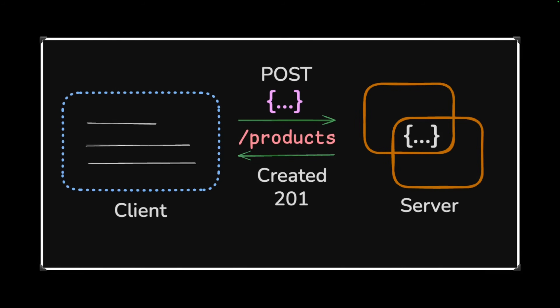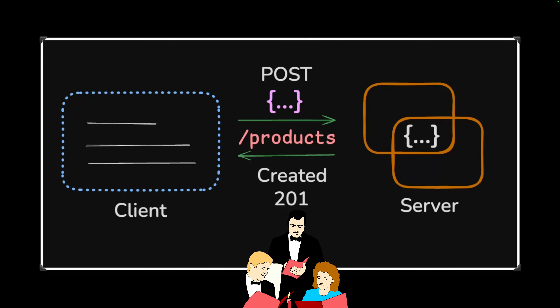The next method is POST. The purpose of POST is to send new data to the server to create a resource. The client sends new product data to the server to create a new product. Once created, you get a response back — in this case HTTP code 201, which means 'Created.' The analogy: you're done reading the menu, you've made your food selection, and now you want to place the order. Placing an order is the right analogy for POST — you tell the waiter what you want and they create it for you.